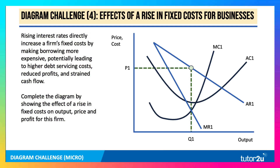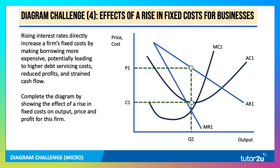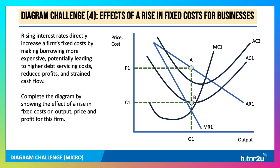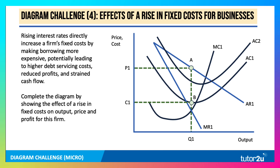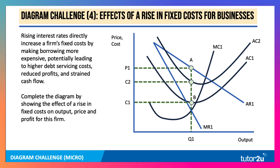A profit-maximising firm initially prices at P1 with an output of Q1 and cost C1, showing total profit. A rise in fixed costs causes an upward shift in average cost (AC) only — there is no change in marginal costs, as marginal costs are not affected by fixed costs. As a result, output stays the same, price stays the same, but cost rises from C1 to C2, reducing the level of profit.